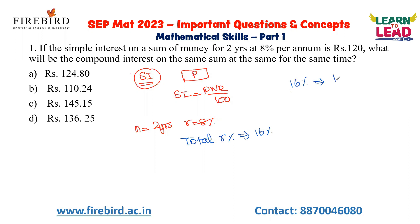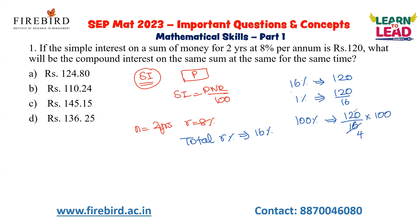We know that 16% of a number is 120. To calculate 1% of that number — which is the principal — divide 120 by 16. Taking the principal as 100%, 1% is 120/16, so 100% will be 120/16 × 100. Simplifying: 4 times and 3 times and 25 times gives us 750. So 750 is the principal we have invested in the scheme.